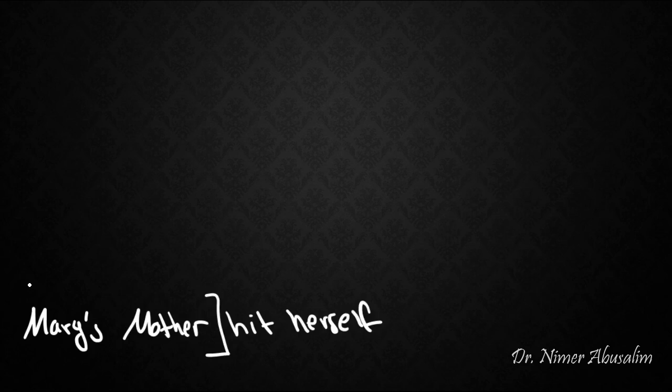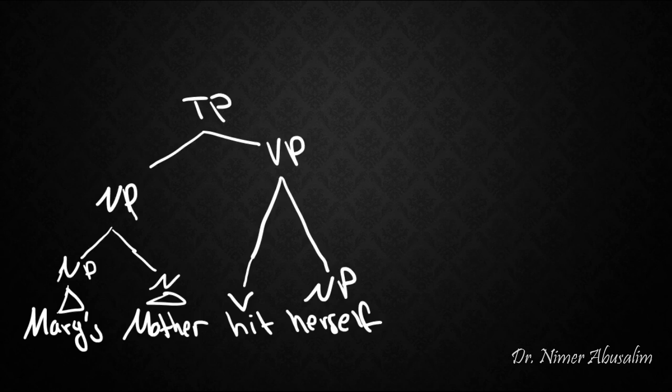Now what about the sentence where we saw only one possible interpretation? Mary's mother hid herself. If you recall, we said that herself can only refer to Mary's mother, all of this together. It cannot refer to Mary alone, and it cannot refer to mother alone. Now why is that? Well, now it's going to seem pretty obvious to you. We said that to get binding, we needed both c-command and co-indexation. Now we can try to co-index the anaphor with one of our options here.